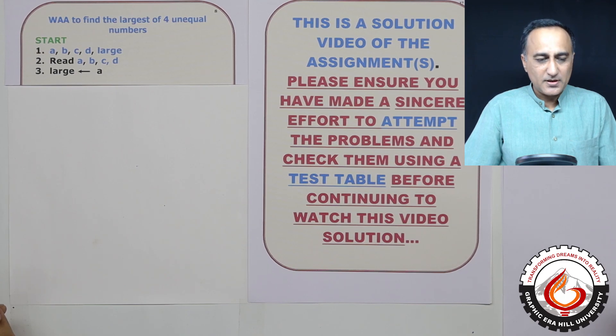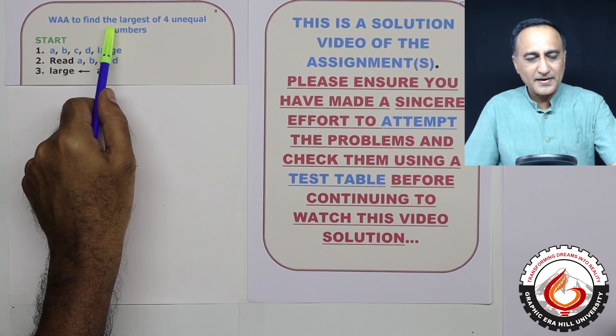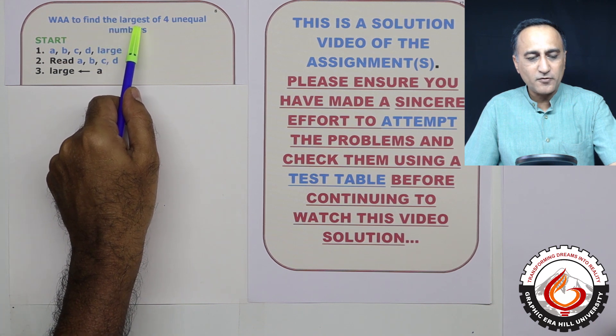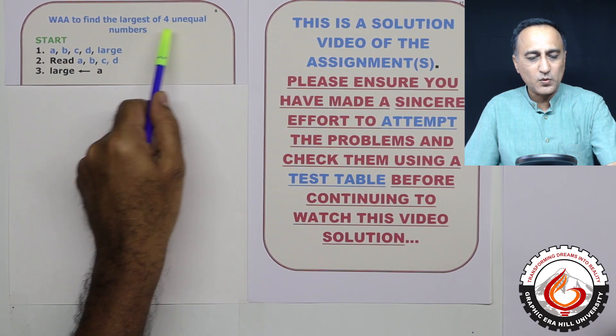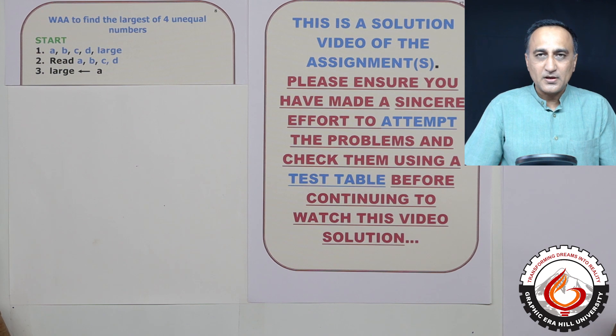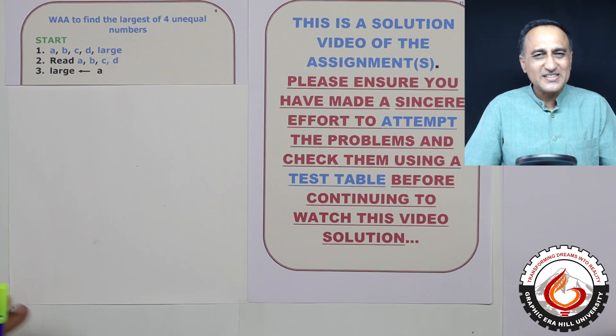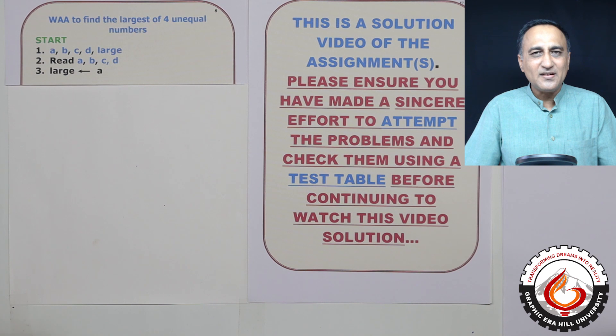In this video session, I am going to discuss the solution to the decision making algorithm where we are asked to develop the logic to find the largest of four unequal numbers. We have already done something similar to this—we found the smallest of three numbers. This is a little opposite to that, but the thinking, other than the basic logic, is almost similar.